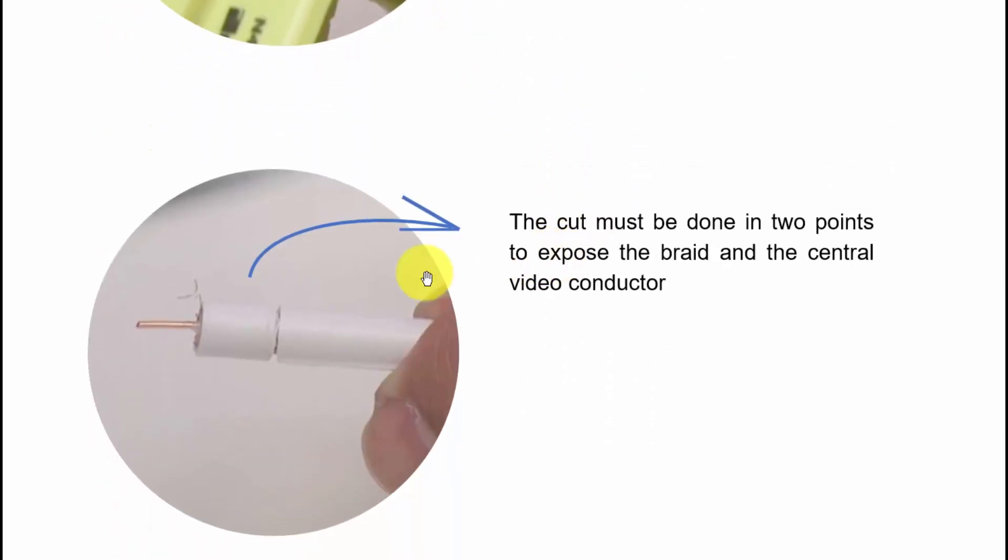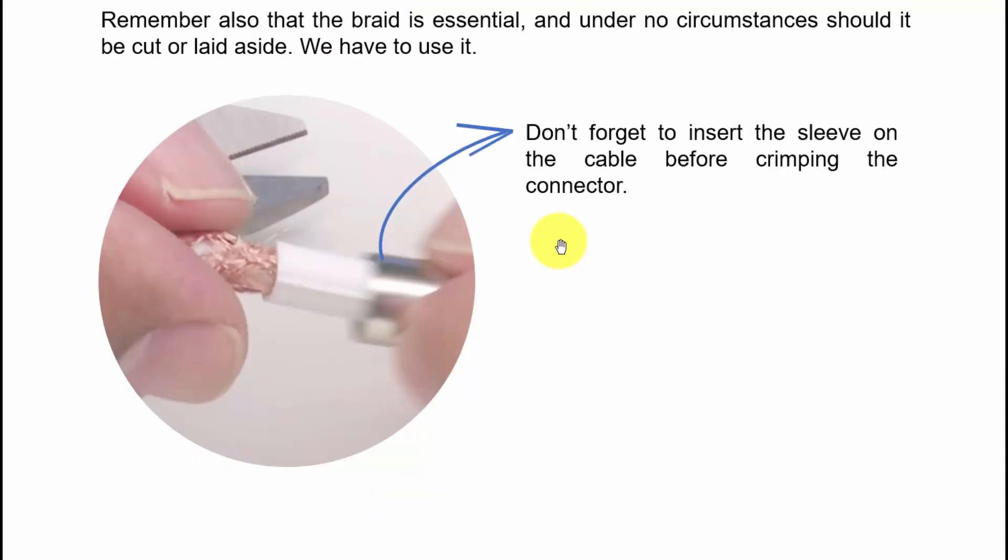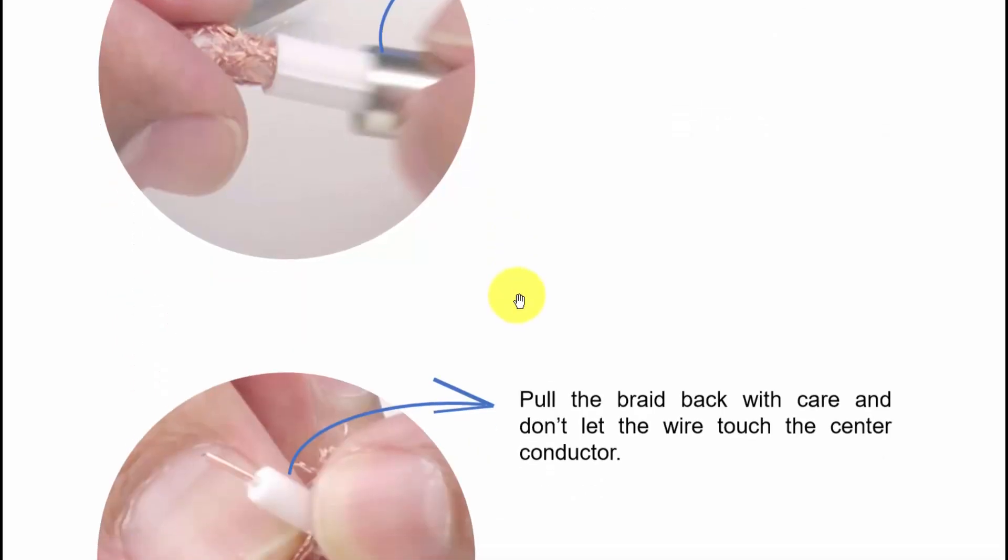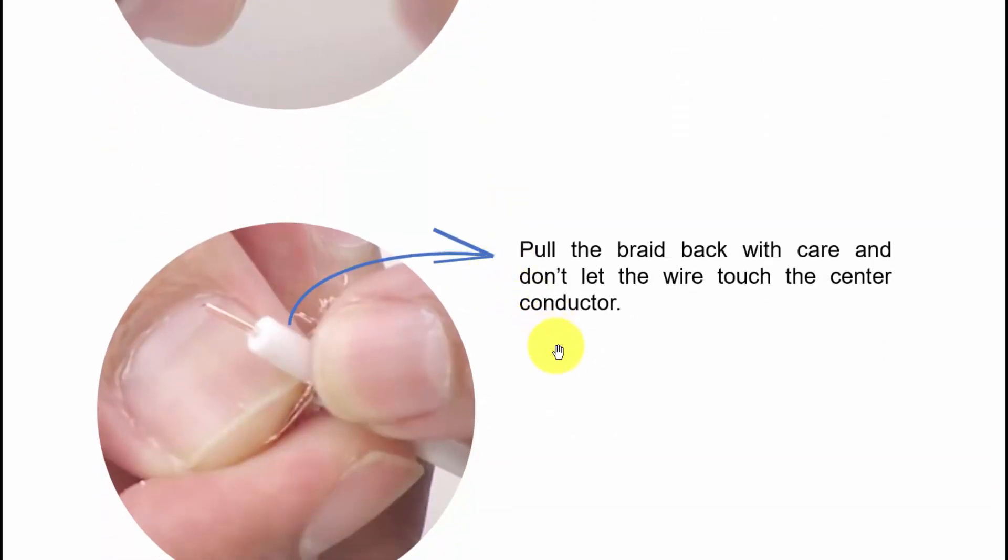Then you need to insert the sleeve here on the cable. There is a metal sleeve you're supposed to insert here in the cable before the crimping. Then just pull the braid back, and then you can expose the dielectric and the central conductor.